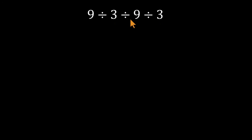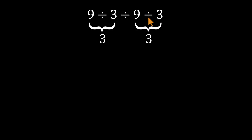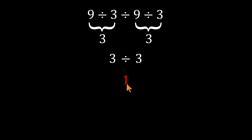9 divided by 3 divided by 9 divided by 3. A lot of people instinctively start pairing things up. 9 divided by 3 equals 3, then they grab the other side — 9 divided by 3 also equals 3. And suddenly it turns into 3 divided by 3, which gives 1. It feels neat, balanced, and completely wrong.